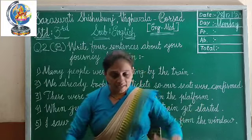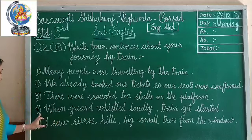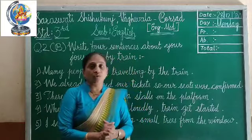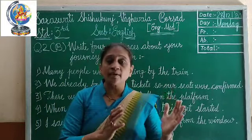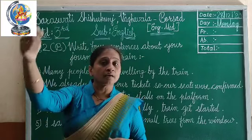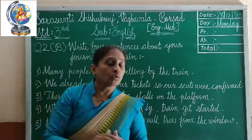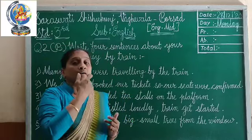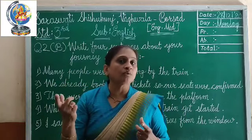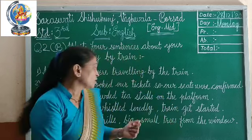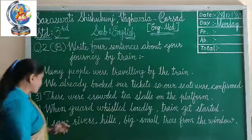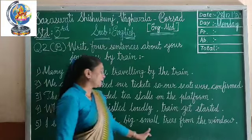When the train came on the railway track and we got in, the guard blew the whistle loudly and the train started. Near the engine there is a guard's bogie — guards stand there showing a green flag so the driver understands it is time to start the train.